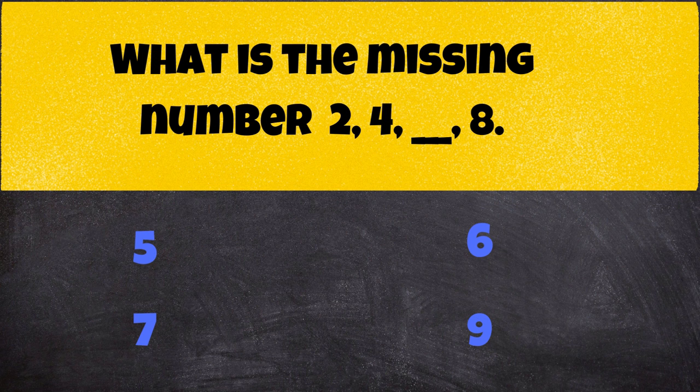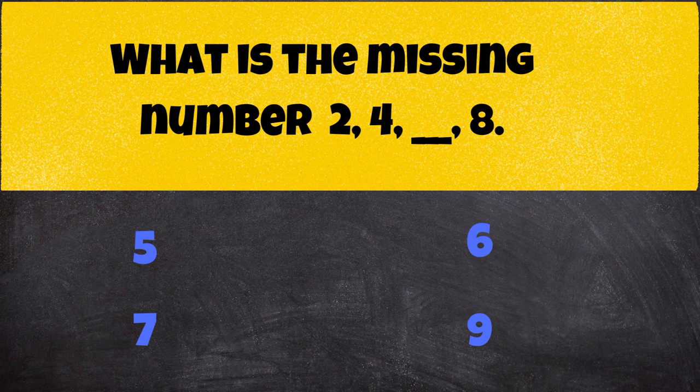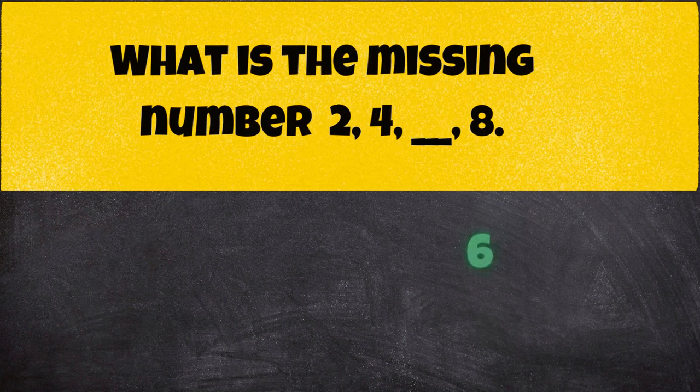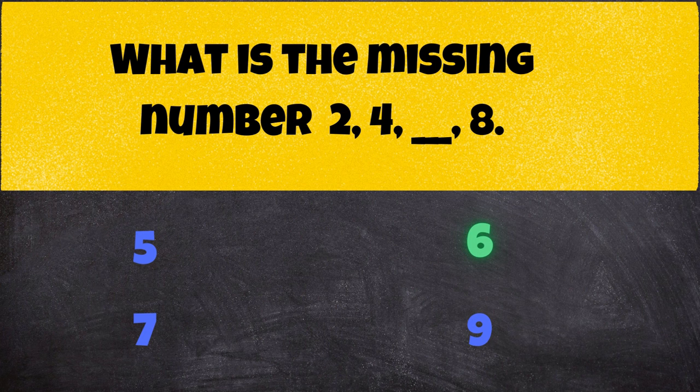What is the missing number in the sequence? 2, 4, dash, 8. Our answer is 6.